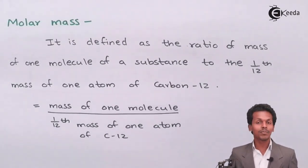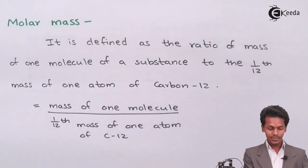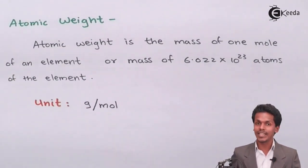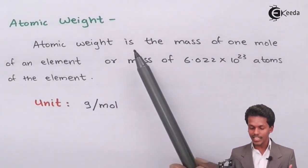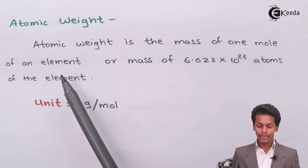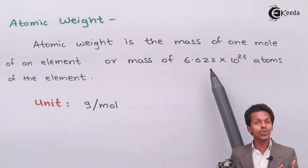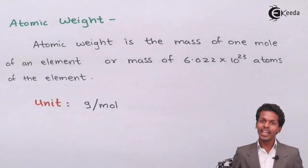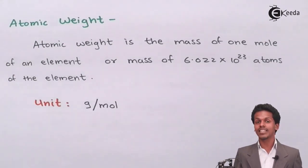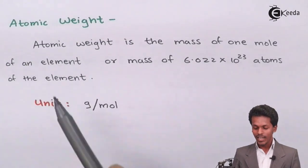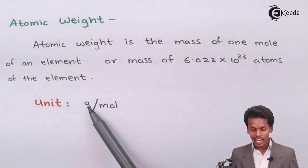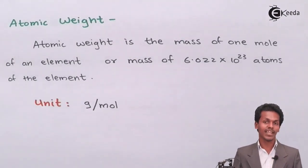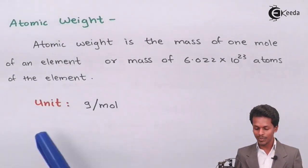Next is atomic weight. Atomic weight is nothing but the mass of one mole of an element, or the mass of 6.022 × 10²³ atoms of the element. Since it is related to mass, the unit of atomic weight is gram per mole, meaning one mole of any substance has a particular mass.